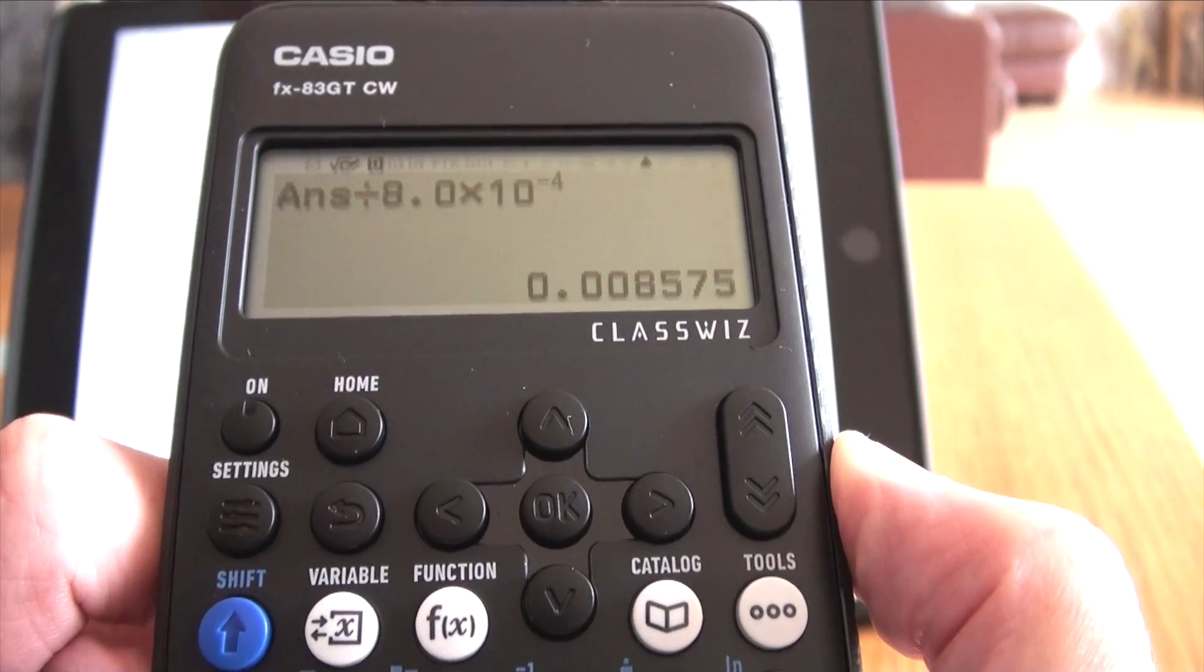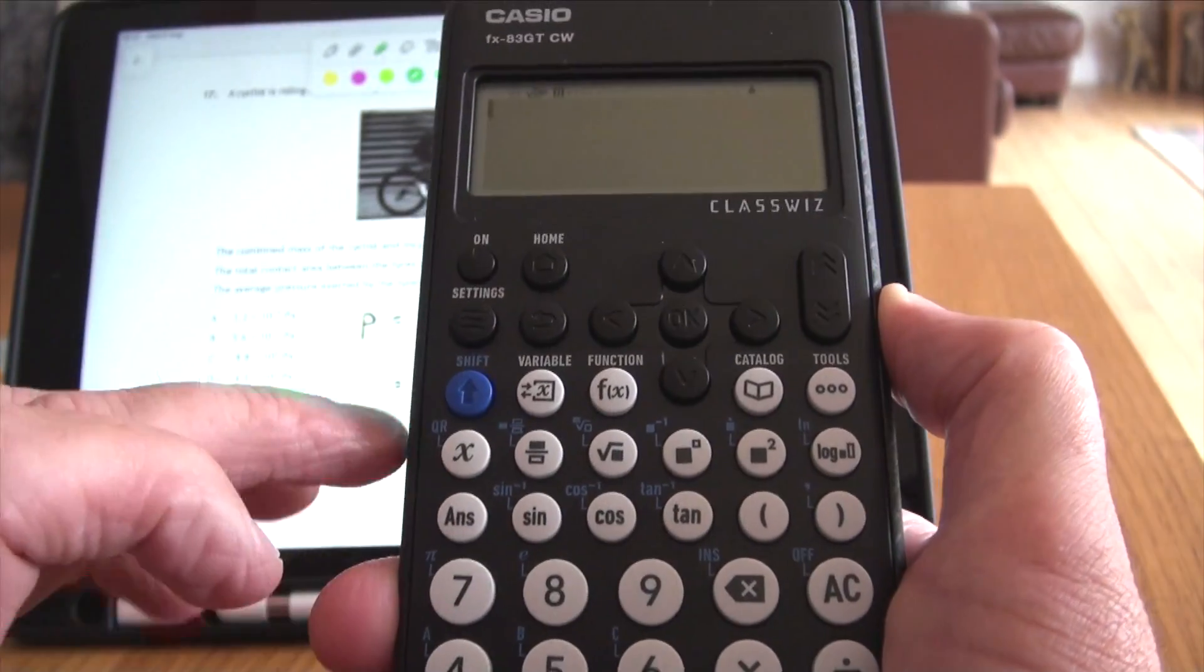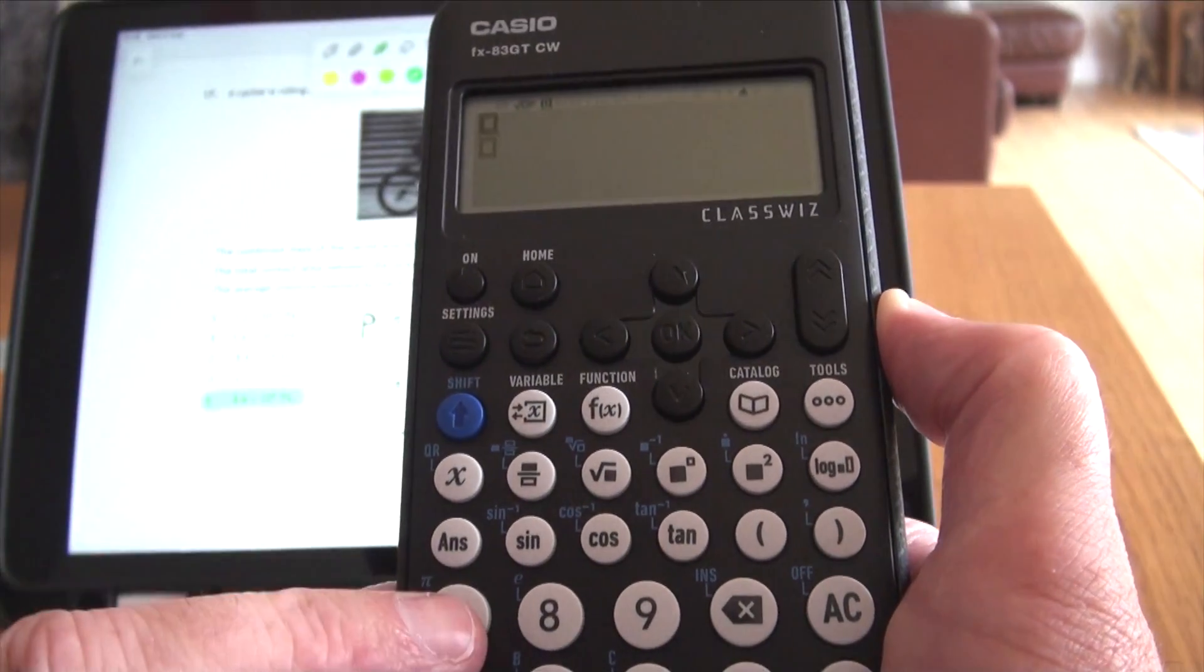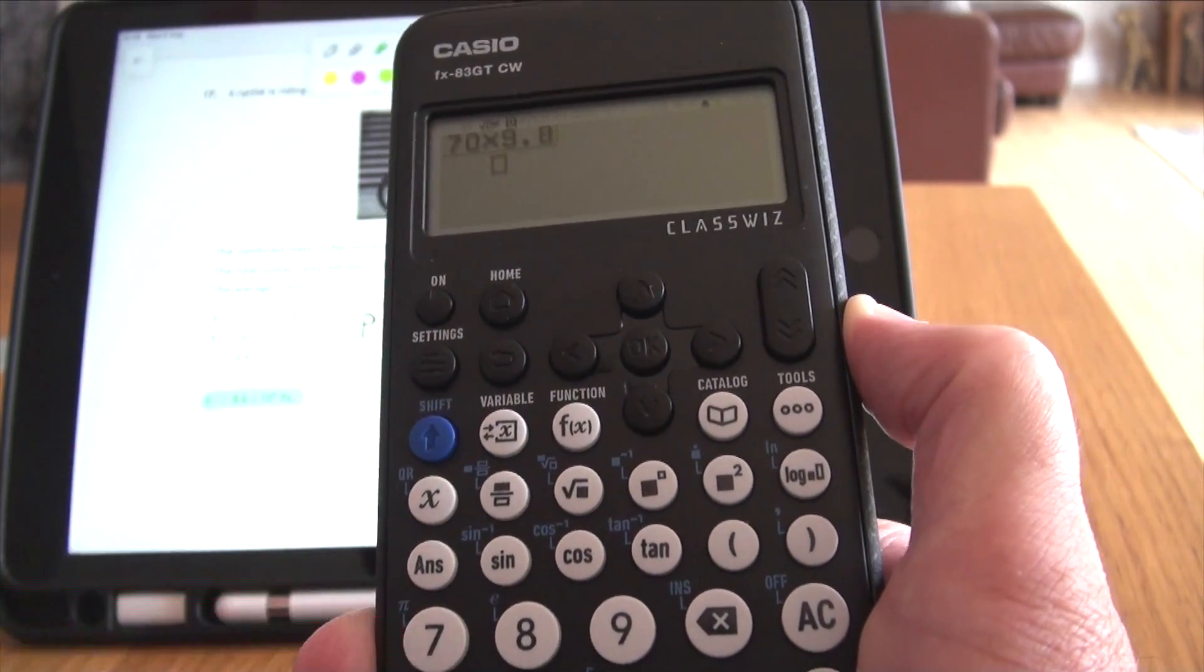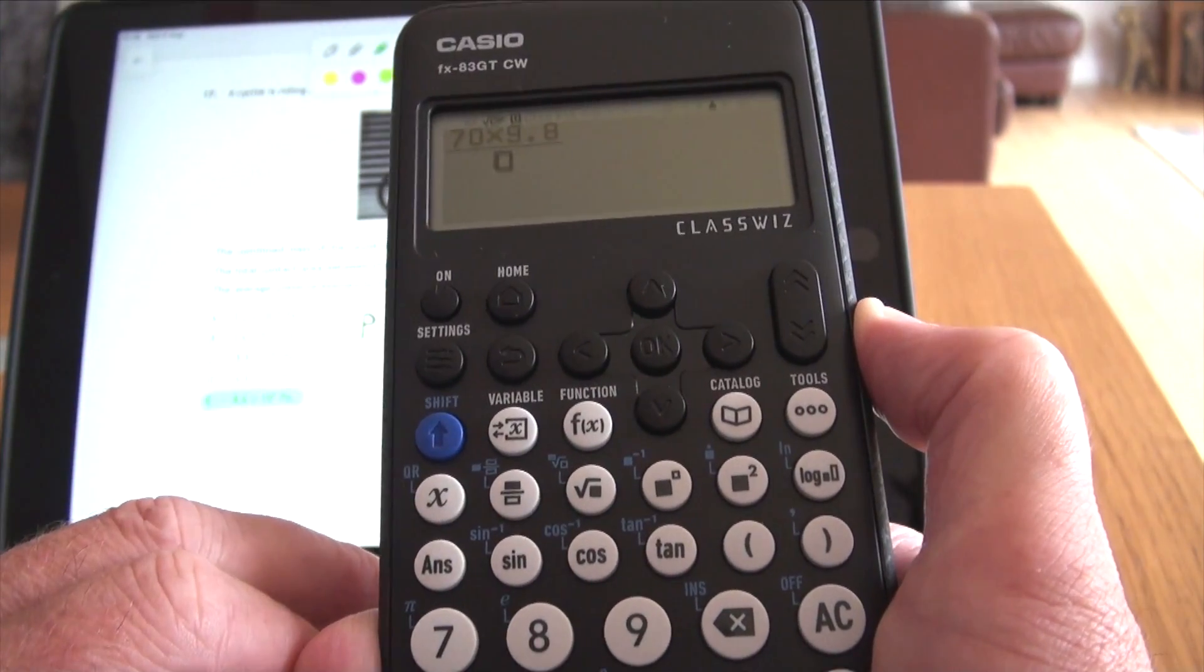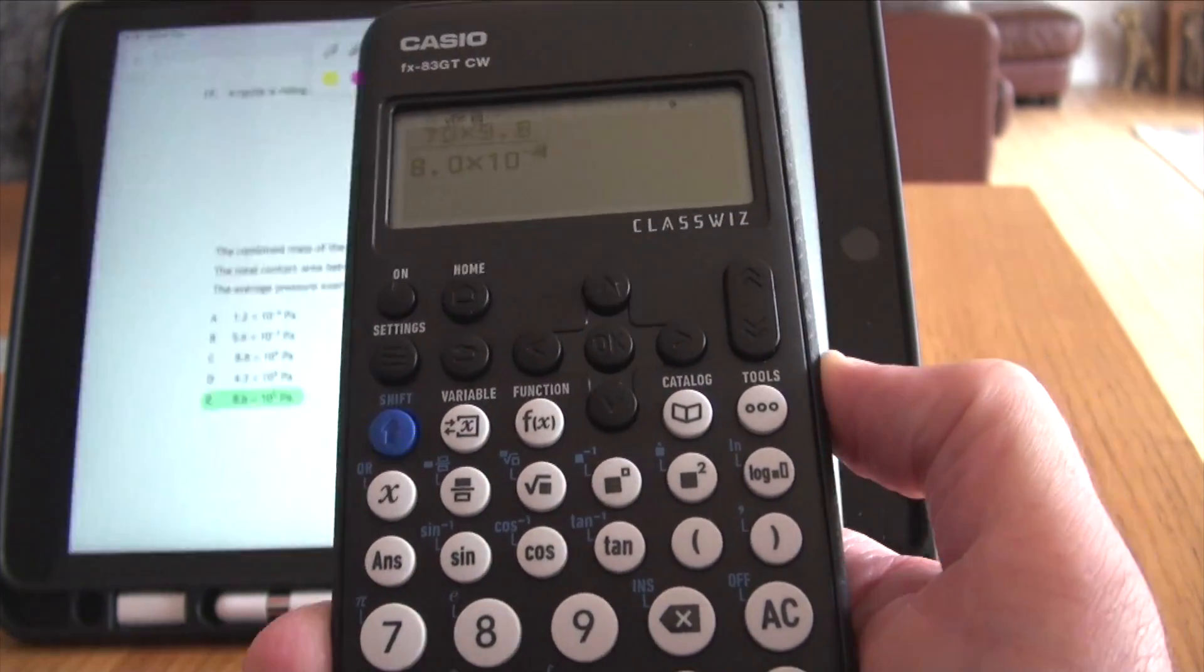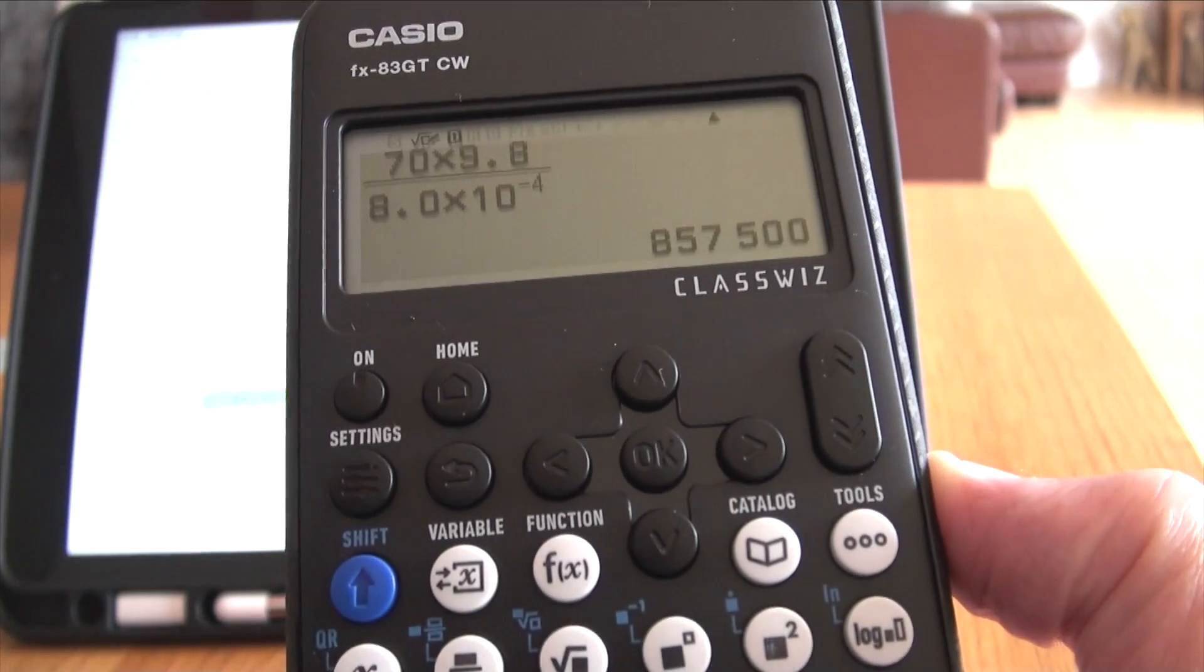So, if you want the right answer, here's what you've got to do. You have to use the fraction button. Let's go 70 times 9.8, divided by 8.0 times 10 to the minus 4, execute. And if we execute that, we get the right answer.